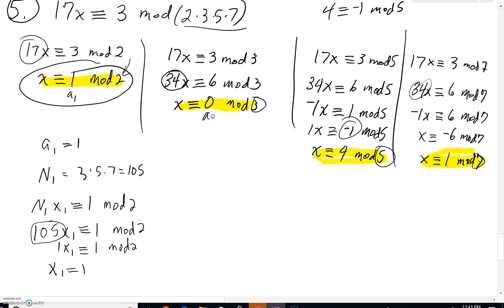We can come over here. Here's your a sub 2. a sub 2 is actually going to be 0. What's your n sub 2? Your n sub 2 would be all the mods multiplied except for this one, except for the 3.